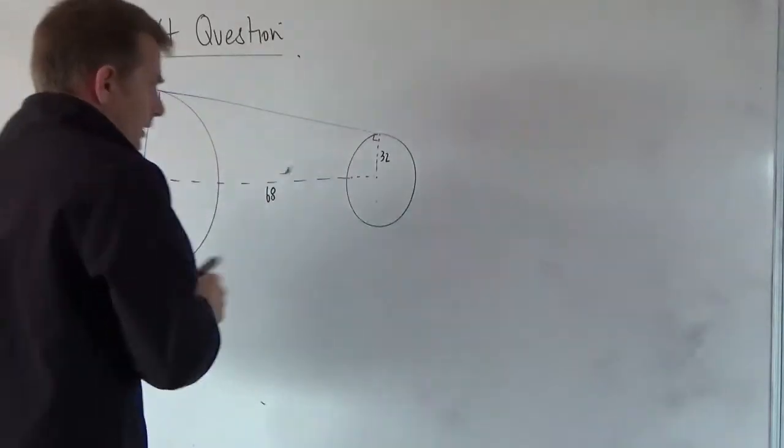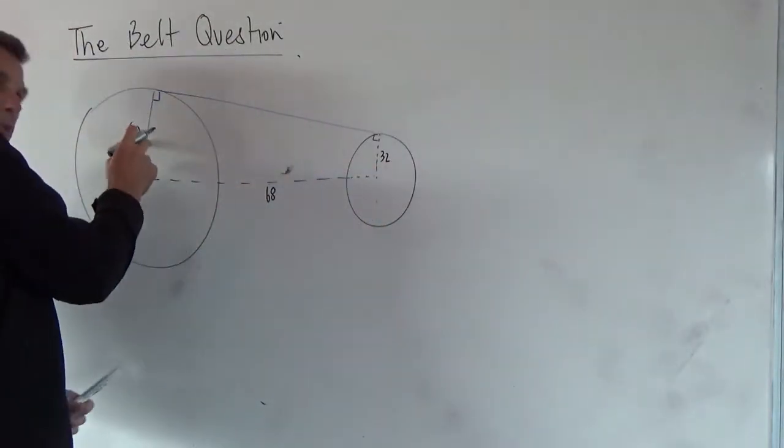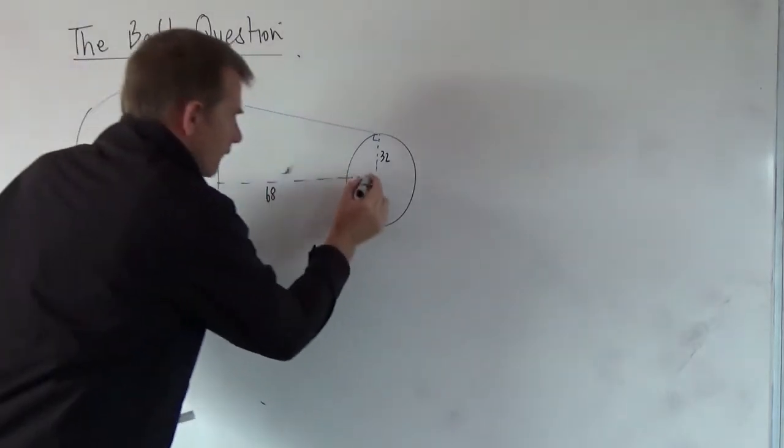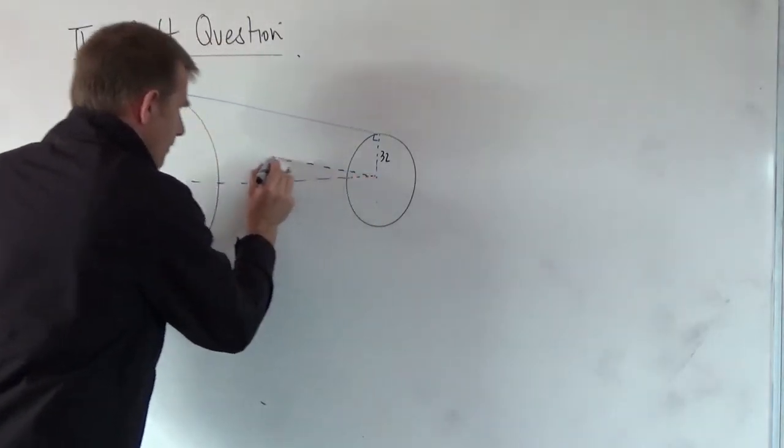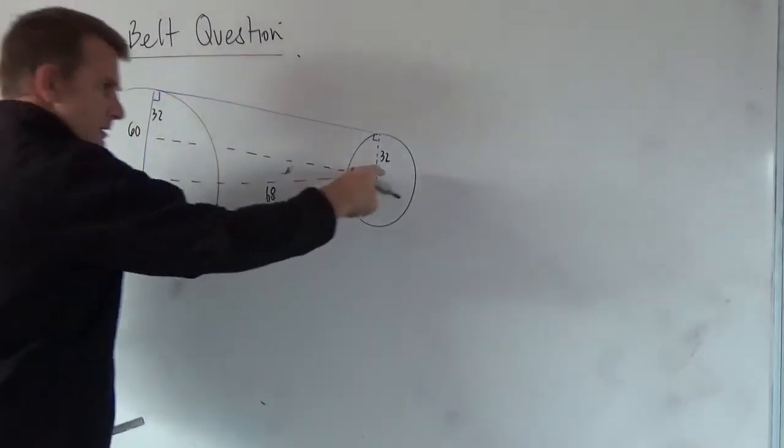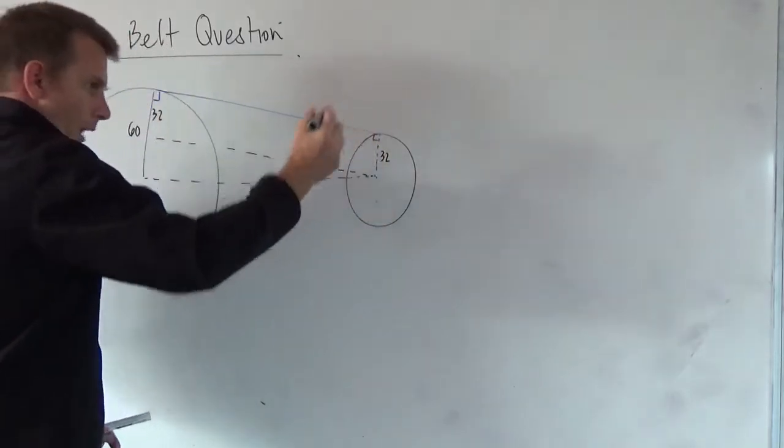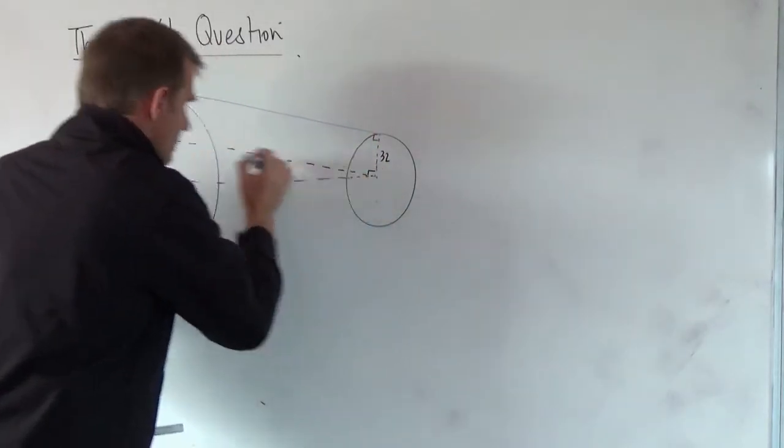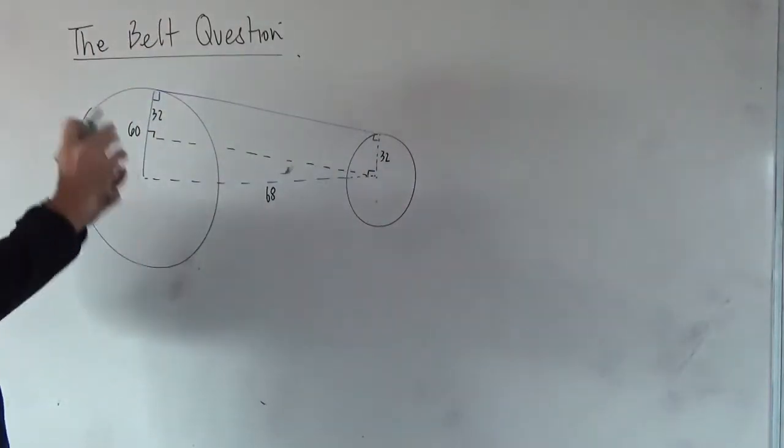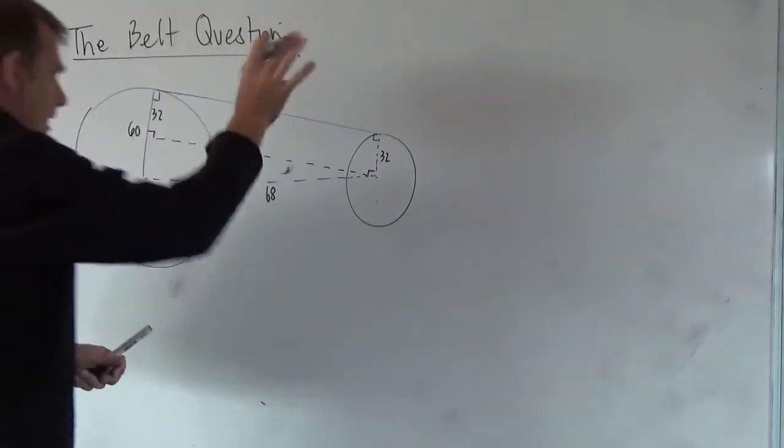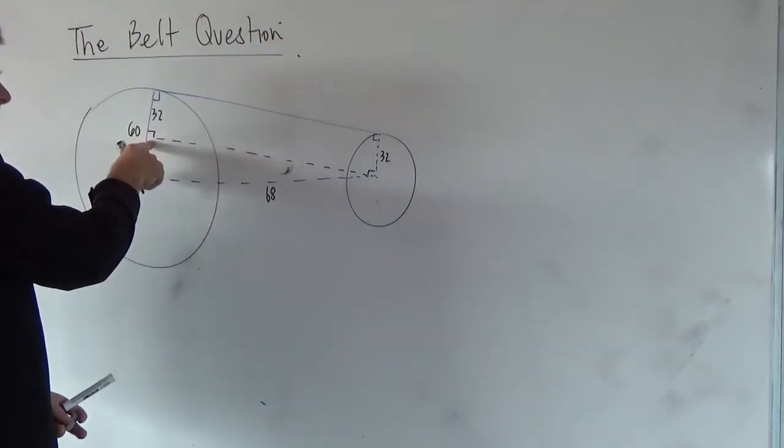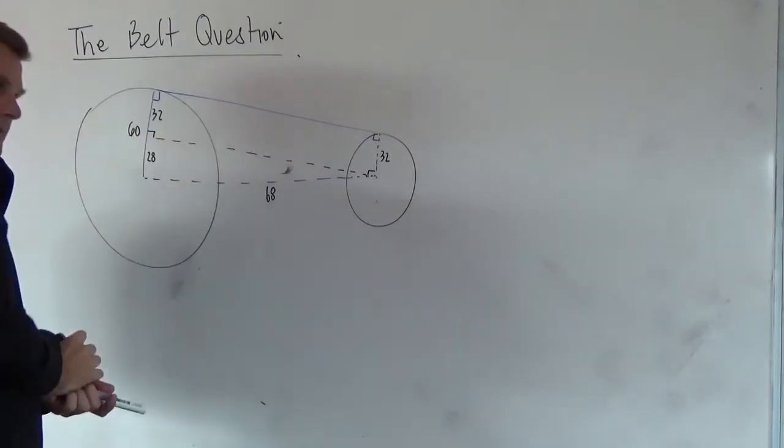Now, this is the trick. If I go from the smaller one to some point along here, such that that is 32 metres, the same as this, well, that means that that is going to be 90 degrees and that is going to be 90 degrees. There's a rectangle sitting right in there. Now that then means that this side's got to be 90 degrees and this distance here has to be 28 metres.